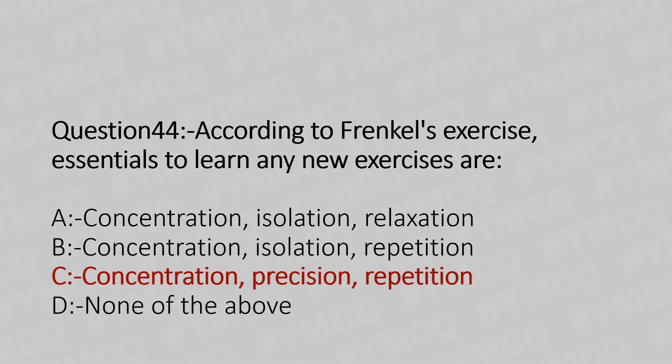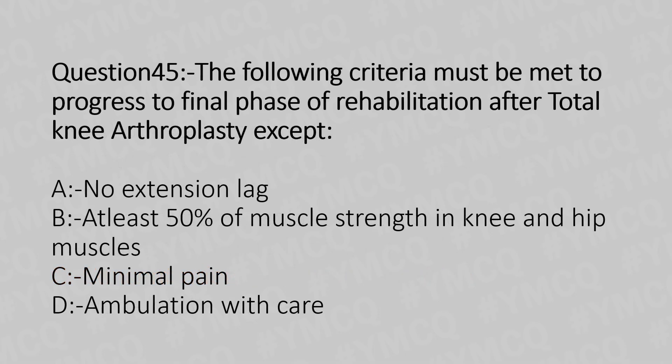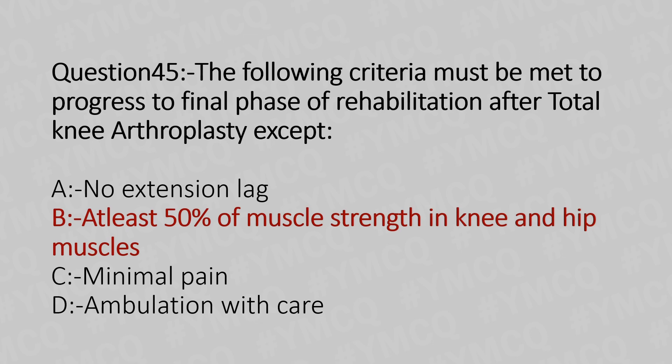Now let's move to question number 45. The following criteria must be met to progress to the final phase of rehabilitation after total knee arthroplasty, except: Option A, no extension lag. Option B, at least 50% of the muscle strength in the knee and the hip muscles. Option C, minimal pain. Option D, ambulation with care. And the answer is Option B, at least 50% of the muscle strength in the knee joint and hip muscles.